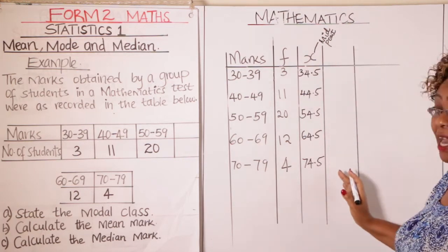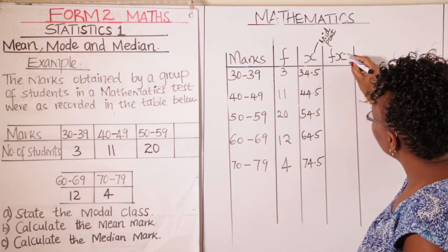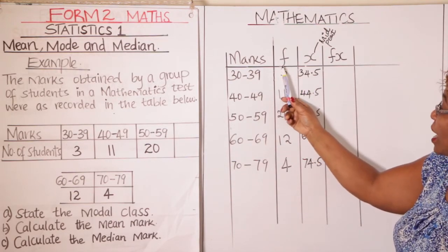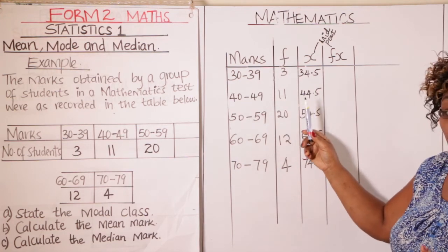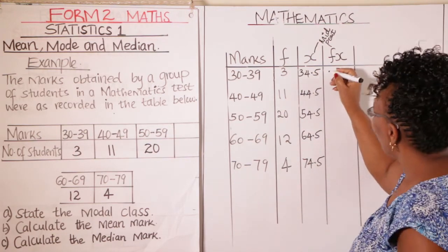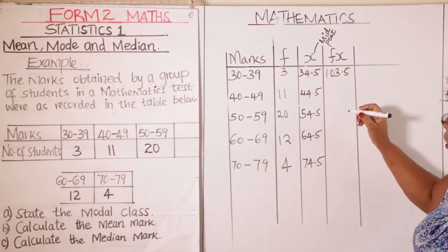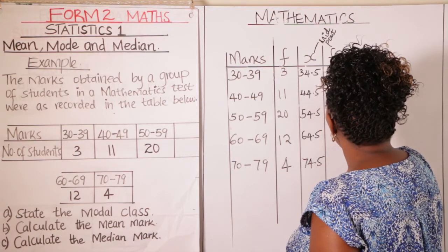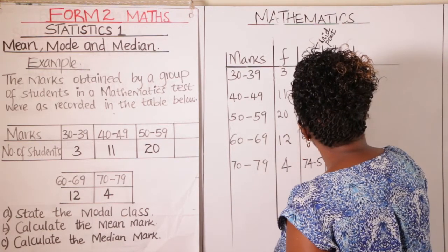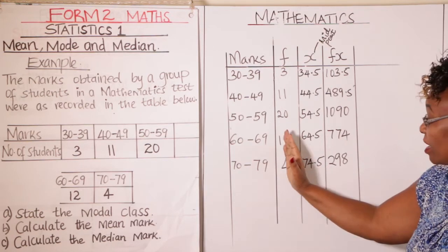You then add a fourth column called fx — that is f times x. To fill this column, multiply your frequency by the midpoint for each row. So 34.5 times 3 gives 103.5. Using a calculator for the others, you get 489.5, then 1090. Fill in the fx column by multiplying f times x for each class.